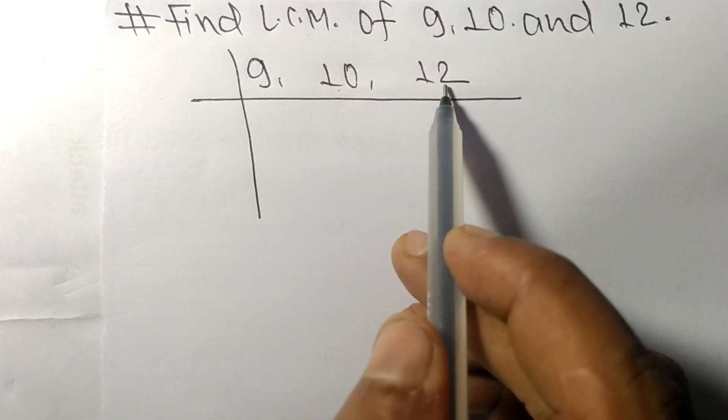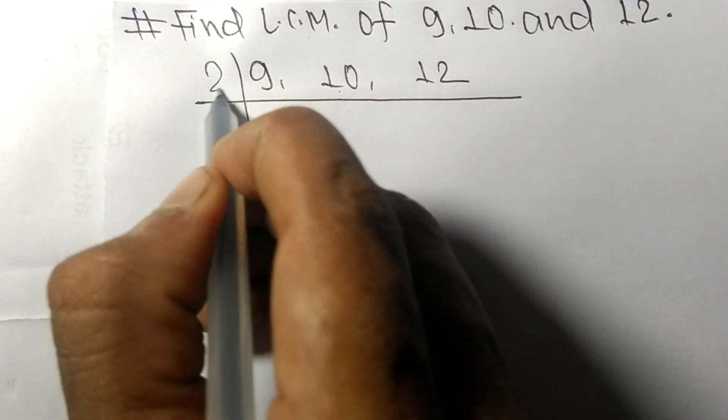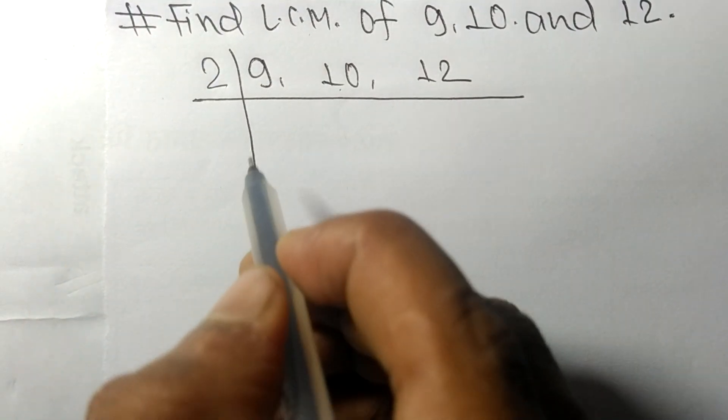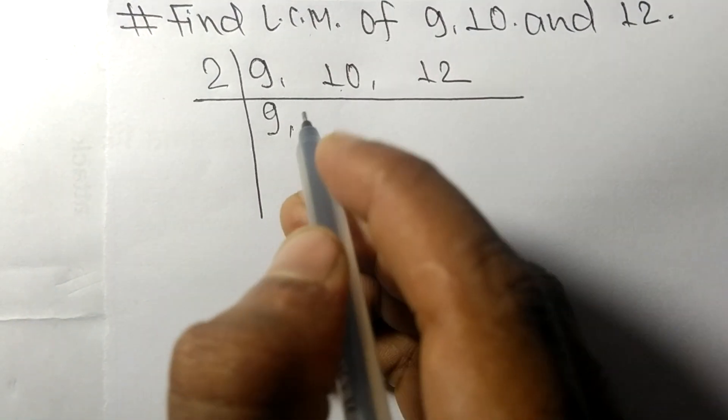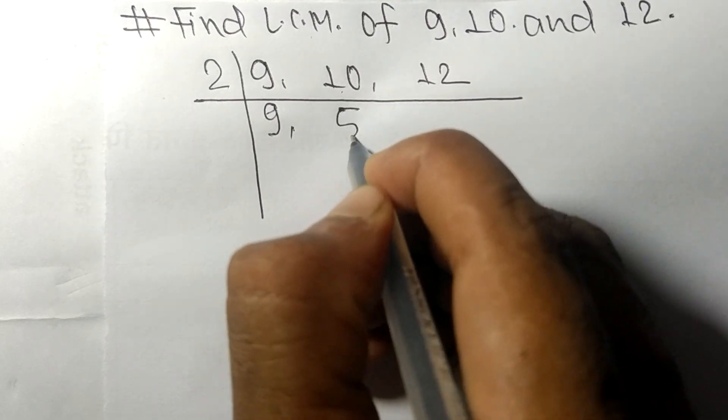10 and 12 are exactly divisible by 2. 9 is not divisible, so it is same. 2 times 5 equals 10, 2 times 6 equals 12.